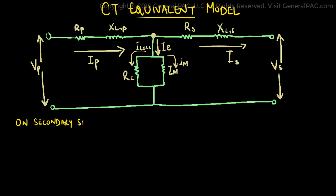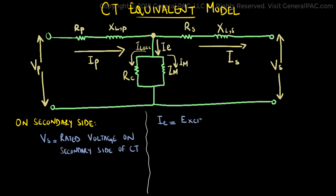Moving over to the secondary side, we have Vs which is the rated voltage on the secondary side of the current transformer. We have the excitation current IE, which is used to energize the magnetic core of the CT.